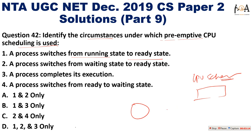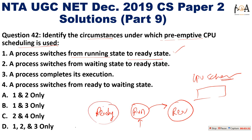If a process switches from running to ready state, preemptive scheduling is needed — because if a process is running too long without moving to the ready state, it needs to be preempted. The transitions are: running to ready, waiting to ready, and ready to running.